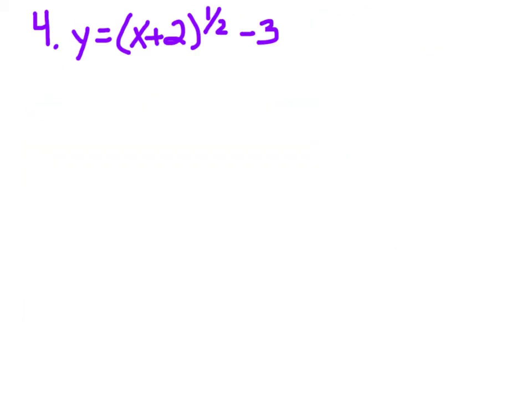Next example: y equals (x plus 2) to the 1/2 power, minus 3. When putting this in the calculator, use parentheses if raising to a power, or let the radical sign cover the entire x plus 2. The minus 3 is outside. The plus 2 inside is a horizontal shift — remember it always goes opposite, so it shifts left 2 units. The minus 3 afterward is a vertical shift down 3 units.